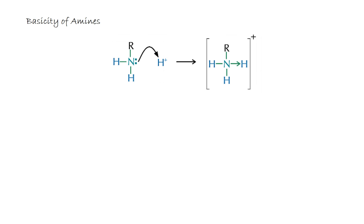Finally we are going to look at the basicity of amines and how they change depending on whether they are primary, secondary, tertiary, or quaternary ammonium salts. It is a basic substance because the lone pair of electrons is able to donate itself to hydrogen ions — this also means it can act as a nucleophile, which is why we've seen the nucleophilic substitution reactions. The availability of that lone pair allows it to act as a nucleophile and to accept a proton and therefore act as a base.